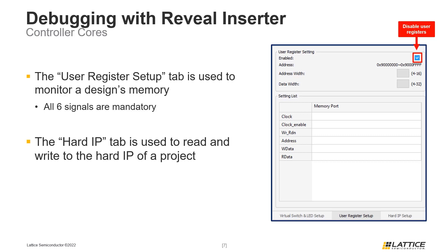The last controller core tab is the Hard IP Setup tab. The purpose of this tab is to allow users to read and write to the hard IP in their project after it has been programmed. By default, Reveal will infer the manageable hard IP of a project from its RTL code.